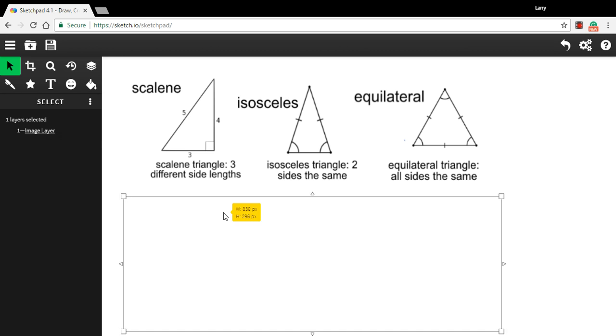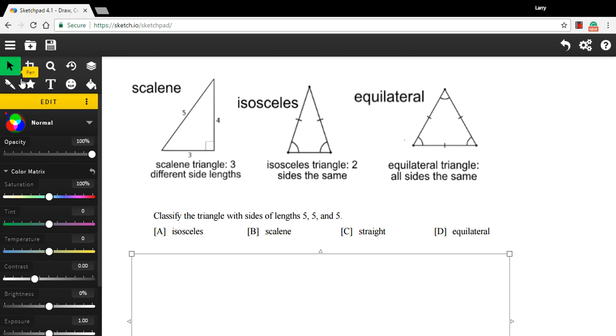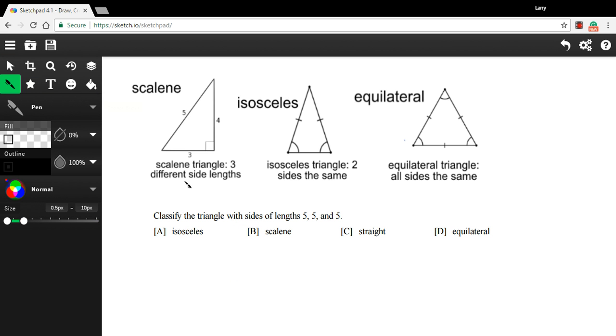So simple enough, let's try a couple of problems here. This first one says, classify the triangle with sides of length five, five, and five. Well, those are all the same. When we have three sides all the same, we have an equilateral triangle.